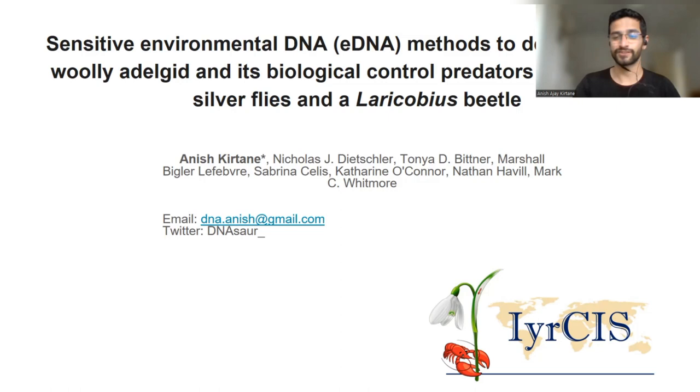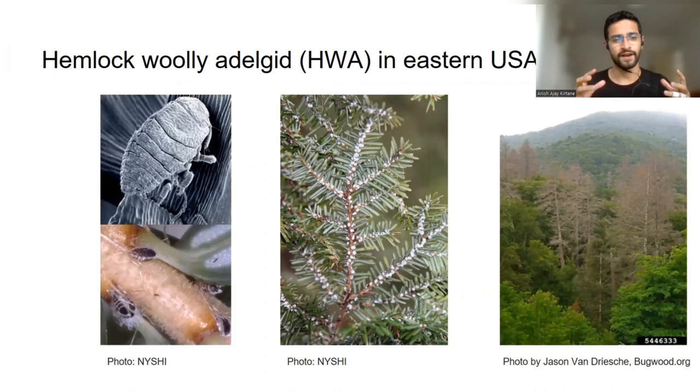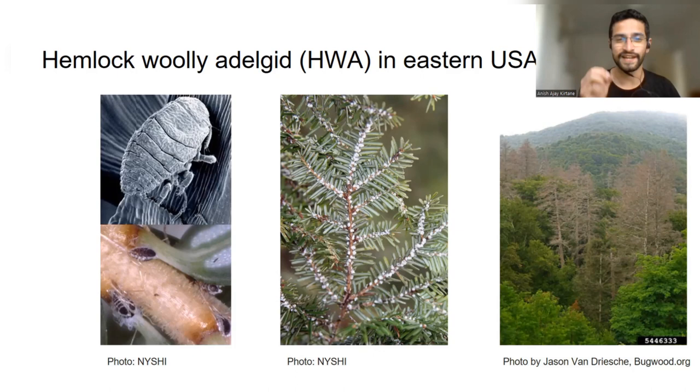So let's talk about the insect in question. This is the hemlock woolly adelgid or HWA. It's a small scale insect that feeds on the needles of hemlock trees. These hemlock trees are quite big trees. They're very important ecologically and where they're distributed, you usually find them to be quite abundant. And you have hundreds of thousands of these massive trees dying because of this really small insect.